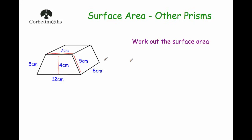Now we're going to work out the surface area of the trapezoid prism. It has a trapezium at the front, a rectangle on the right-hand side, a rectangle on the left-hand side, a rectangle on the top, a rectangle on the bottom, and a trapezium at the back. We'll work out the area of those six faces and add them together to get the total surface area.